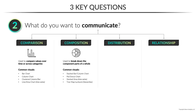Composition visuals are used to break down the component parts of a whole. This is where you'll typically use stacked bar or column charts, pies and donuts, stacked area charts for showing composition changes over time, and maybe things like tree maps or sunbursts if you're dealing with hierarchical data specifically.